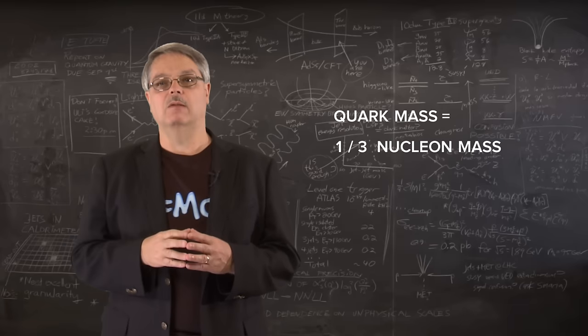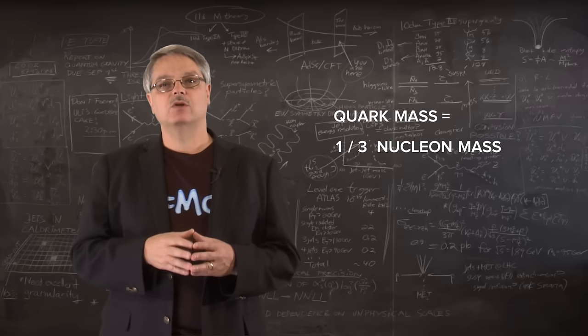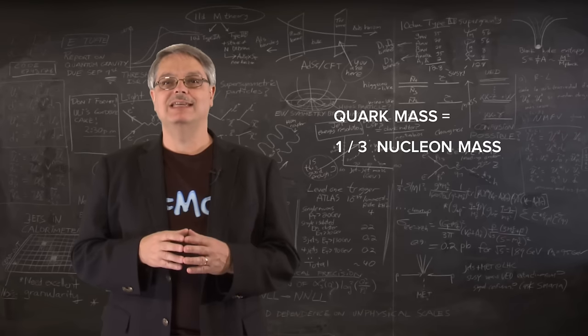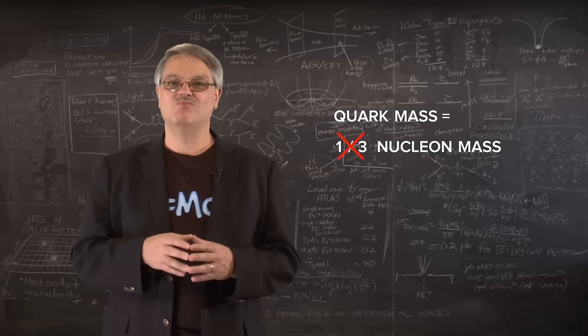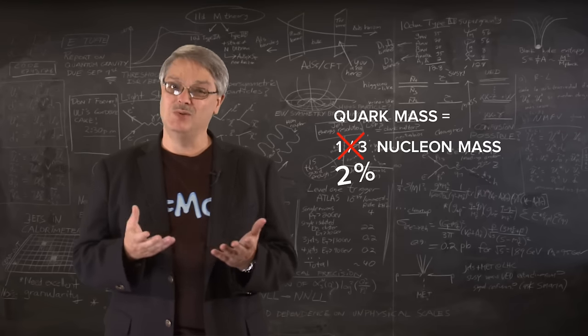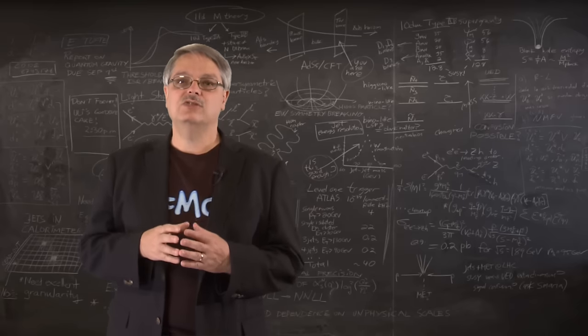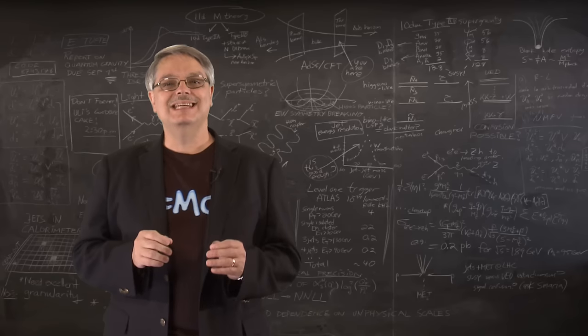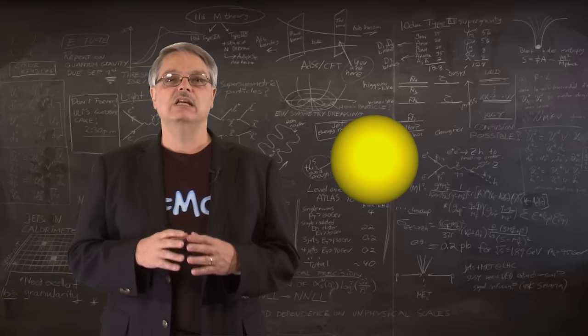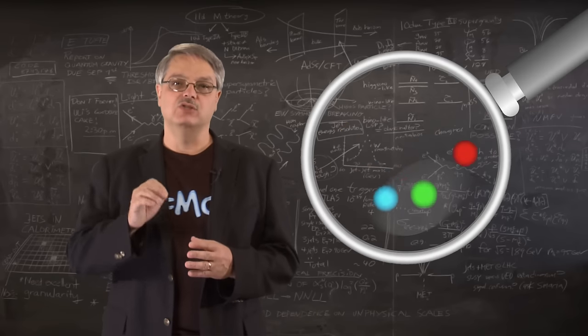However, there's only one problem. When we measure the mass of the quarks and add them up, we find that they actually make up only about 1 or 2 percent of the nucleon's mass. So, where is the other 98 percent? To understand that, we need to have an idea about what a proton would look like if you had a magic magnifying glass and could study it.